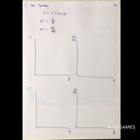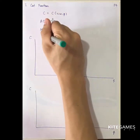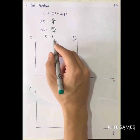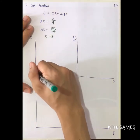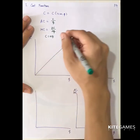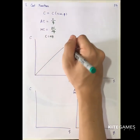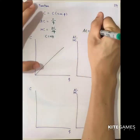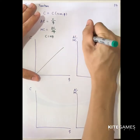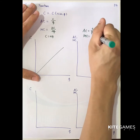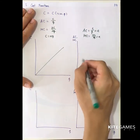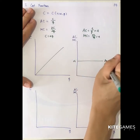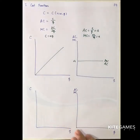Usually you will come across two types of cost function. The first one is a linear cost function, where cost is just a constant relation with Q, so the cost function will be a straight line, linearly upward. In this case, AC will be C over Q, that is A, and MC is also partial C over partial Q, also A. So if the total cost is linear, average cost will equal marginal cost at the constant rate.